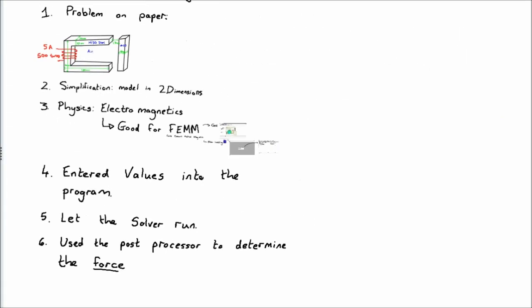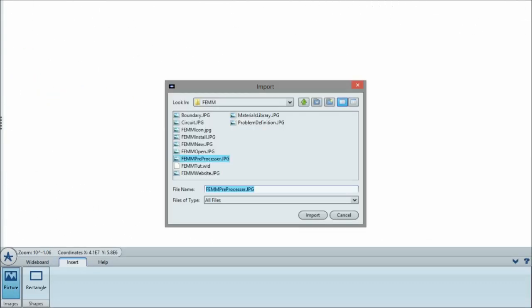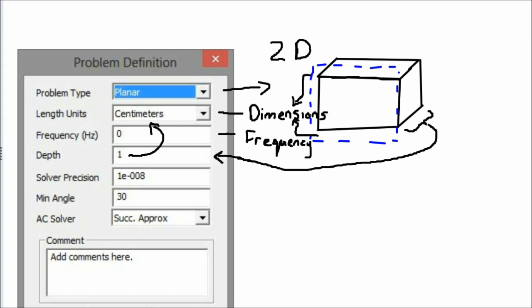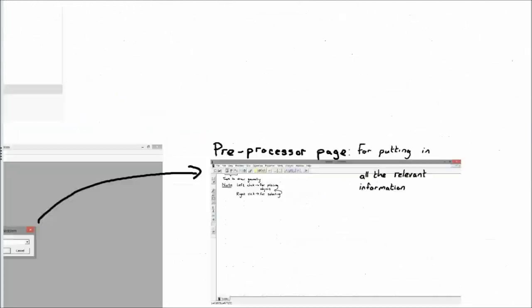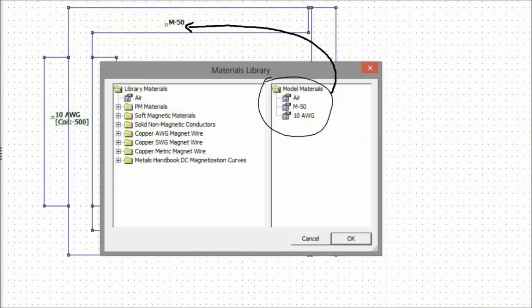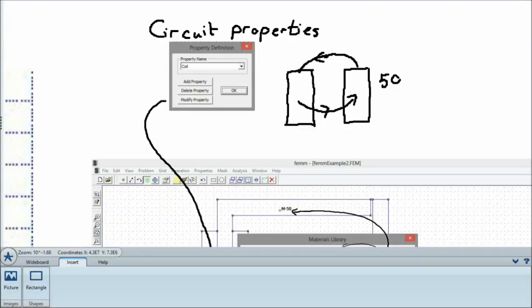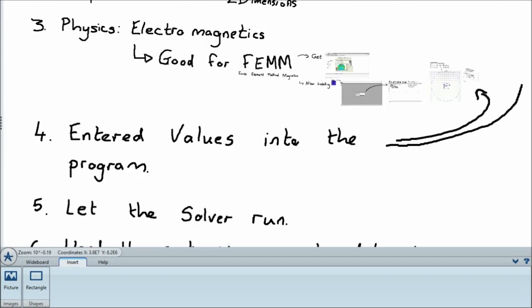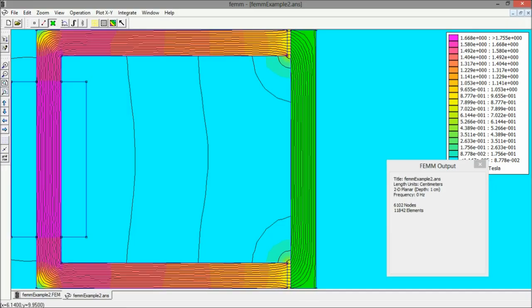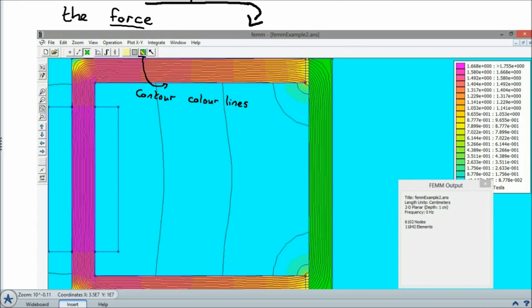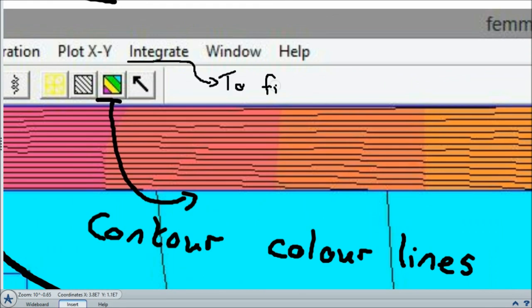Let's review what we did. We first got an idea of what the problem was without using the computer. Then, we looked at the geometry and how it could be simplified with symmetries. After that, we assigned properties ranging from physics to materials. We then let the computer process this information. Finally, we honed into the result we were interested in and saw that display. These general guidelines can also be applied to other finite element packages and highlight the importance of understanding the problem before working on the computer program.